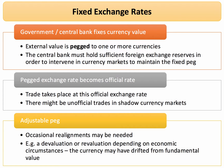The opposite of a floating exchange rate is a fixed exchange rate, where the external value of the currency is anchored or pegged to one or more currencies. The central bank must hold enough foreign exchange reserves to intervene and maintain the fixed peg. Trade takes place at the official rate, but if that rate is unacceptable, shadow or secondary markets can emerge. Occasionally with a fixed exchange rate you have to realign the currency — an upward movement is a revaluation, a fall is a devaluation, particularly if the currency has moved away from fundamental value.